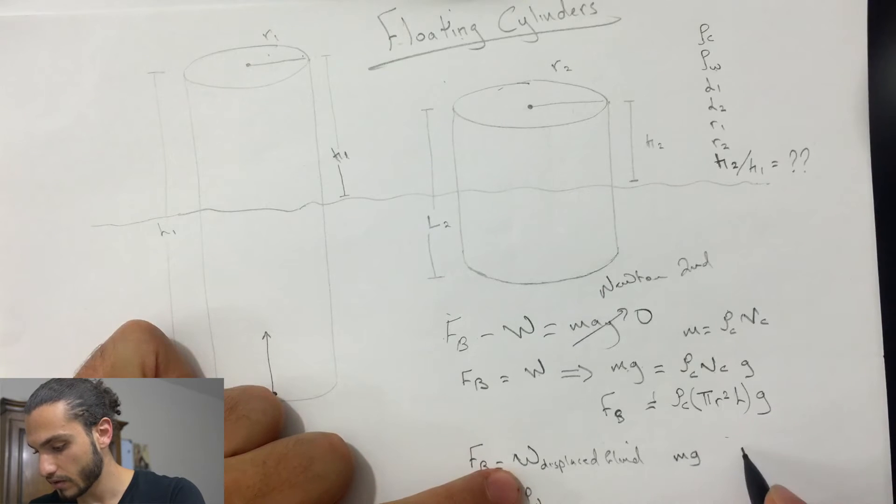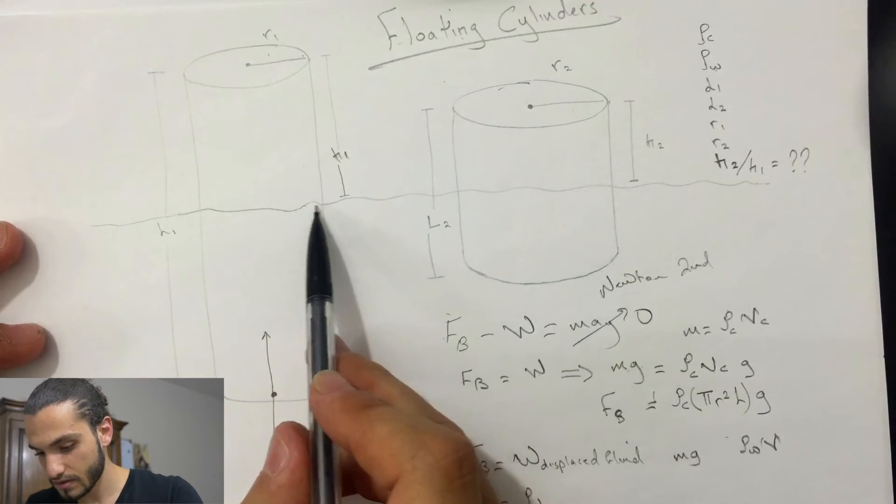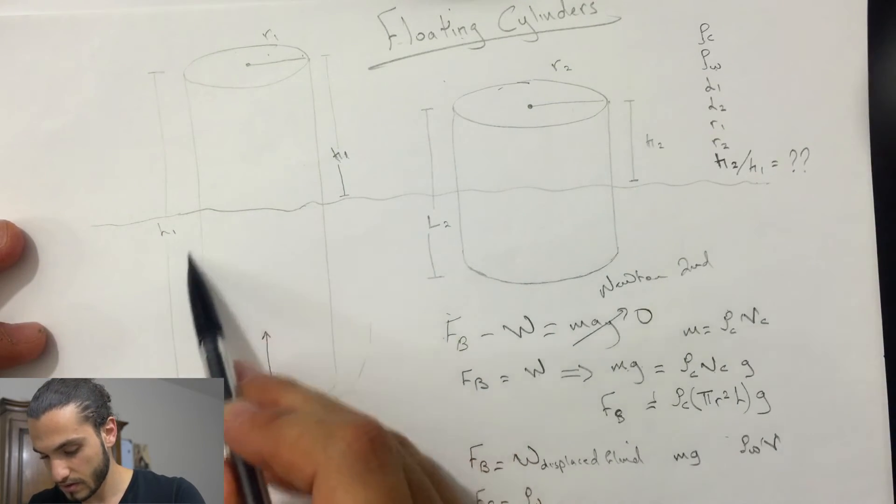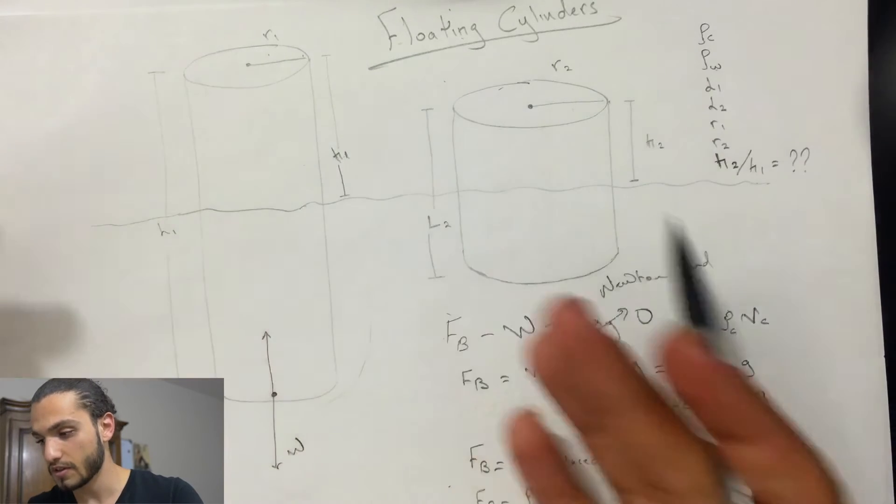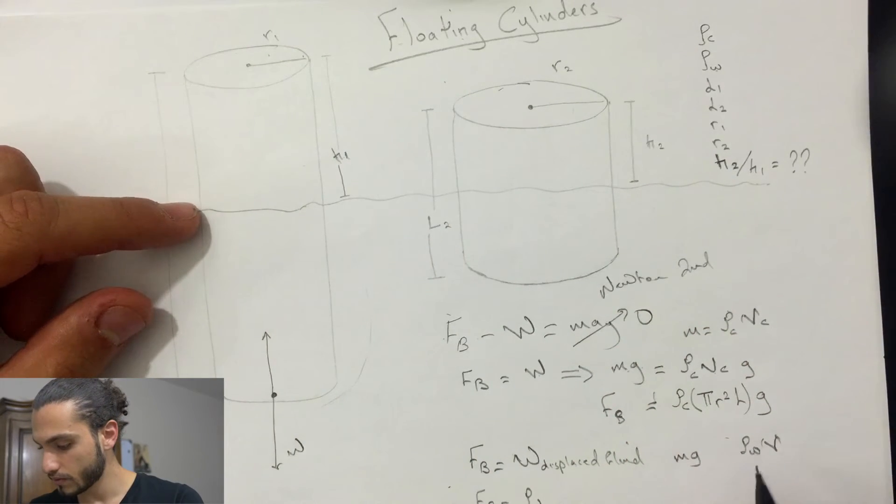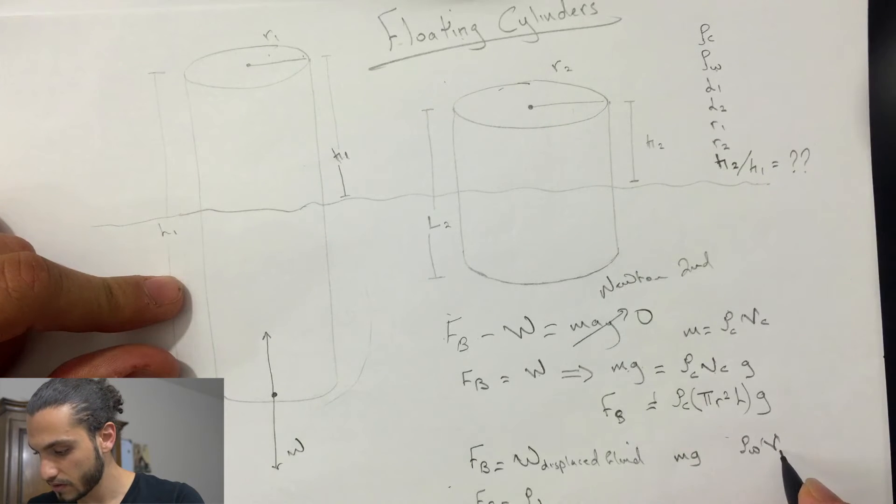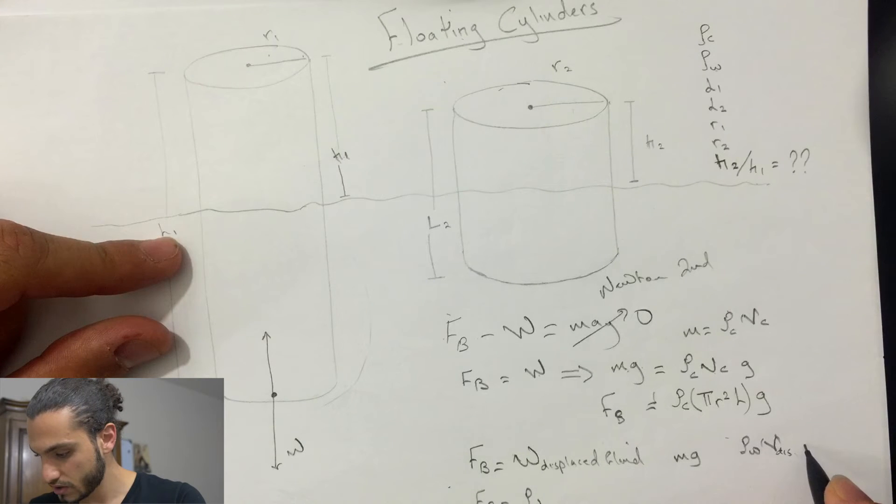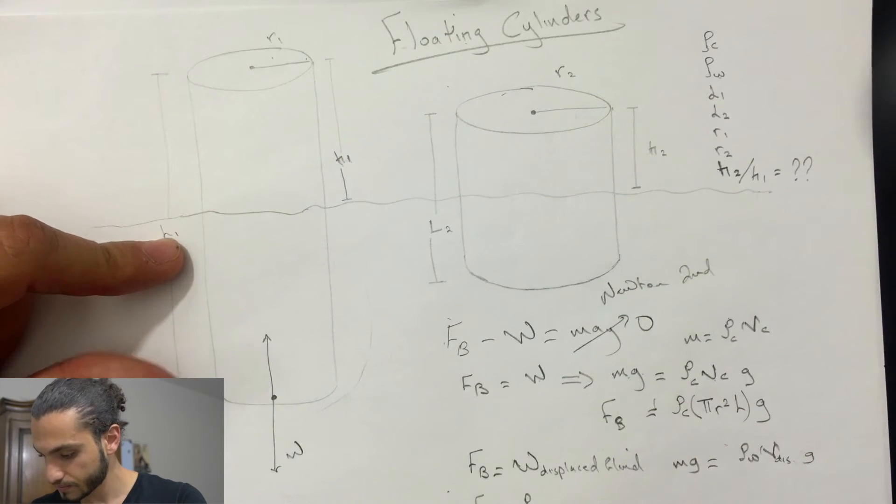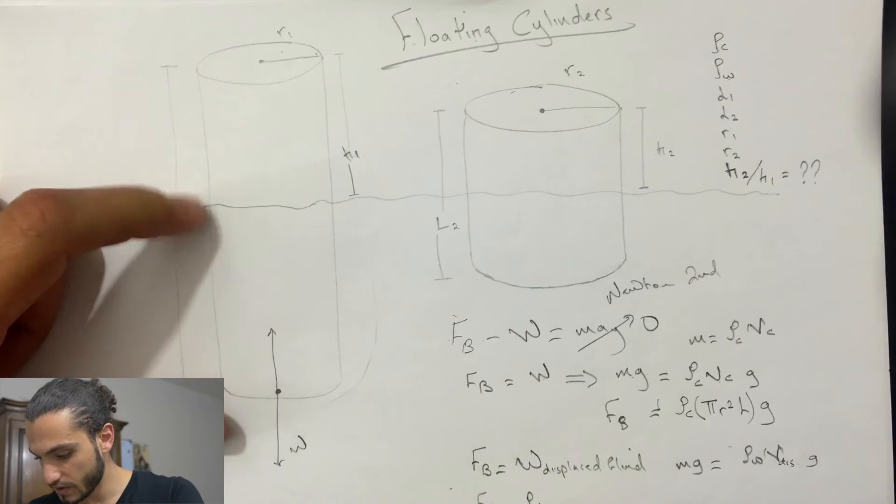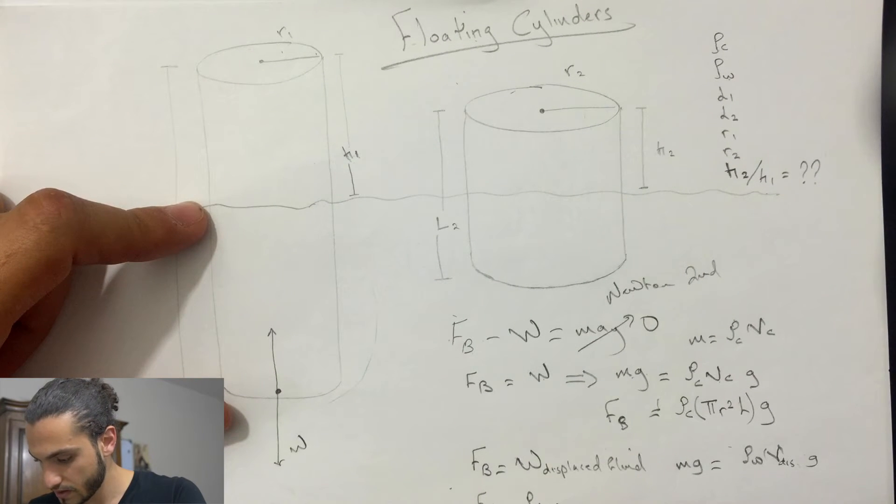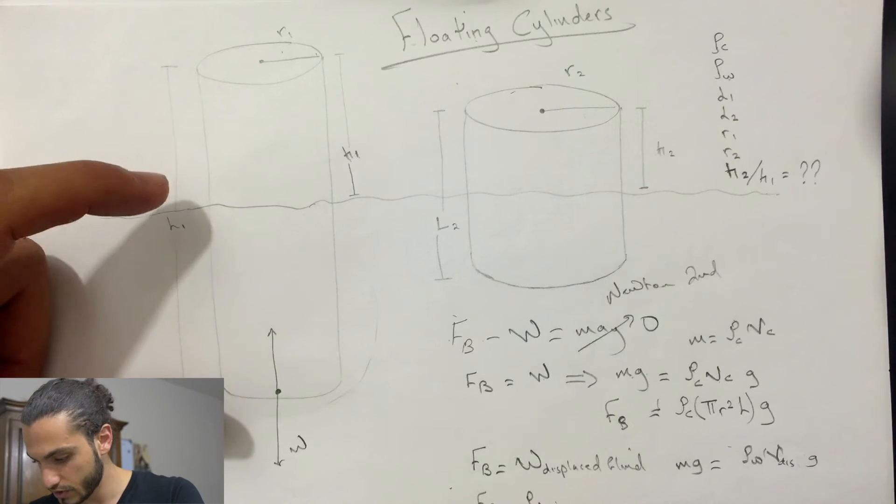The mass in this case is the mass of the displaced water, which is the rho of water, the density of the water, times the volume of this area, the volume of this thing just under the water because that's the displaced one. So the volume of this guy is rho times the volume, which is...